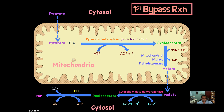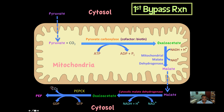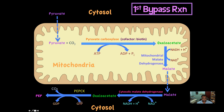Now look at something cool: at the beginning of the reaction CO2 was added, and at the end of the reaction CO2 was removed. This is one way of pushing the reaction forward. The first step required one ATP molecule, and the PEPCK step required one GTP molecule.